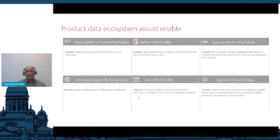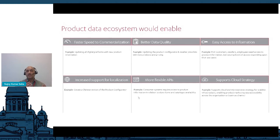So what does the product data ecosystem enable us? It enables faster speed to commercialization. All new product-related information can be available quickly and easily to different channels. Defining a product data ecosystem gives different product configurators and reseller price lists with new products and pricing. It delivers better quality and easily accessible data, supports localization and speed, and supports a cloud strategy with more flexible APIs.